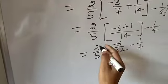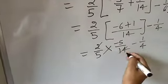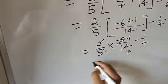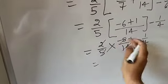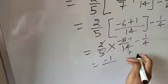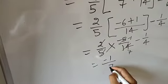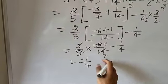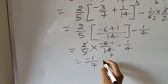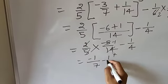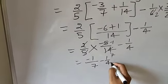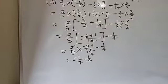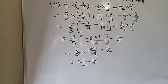Multiply — 5 and minus 5 will be cancelled, and 2 times 7 is 14. It will be minus 1. Minus 1 into 1, that will be minus 1 upon 7. And it will be minus 1 by 4. So that is minus 1 by 7 minus 1 by 4.